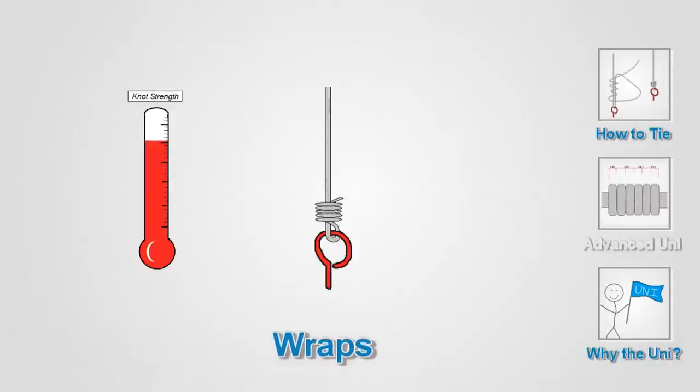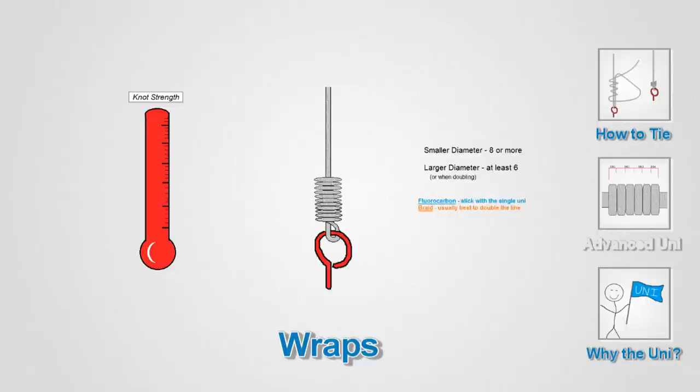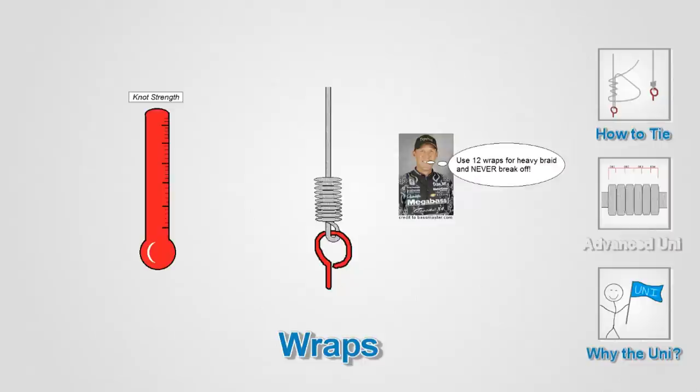To reach the full potential of this knot, you need to use as many wraps as possible. The more wraps, the stronger the knot's going to be. For smaller diameter lines, you can use more wraps. Eight or more is best. If you're doubling the line, you can get away with using less wraps, like around six. One of the strengths of the Uni Knot is its small knot size, so don't worry about using lots of wraps.